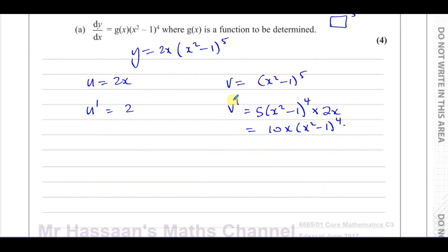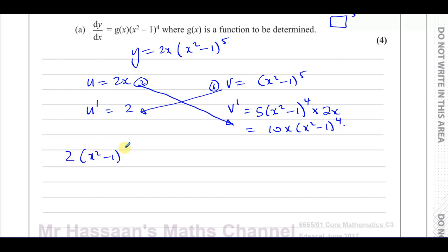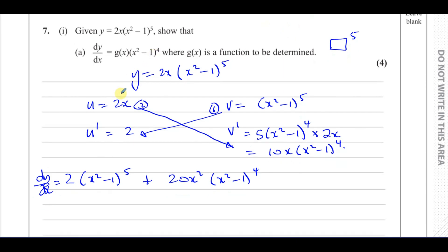Using the product rule — I like to go from this times this plus that times that. So it's 2 times x squared minus 1 to the power of 5, plus 10x times 2x, which is 20x squared, and then you have x squared minus 1 to the power of 4. This is dy/dx, and we want to express our answer in the required form.